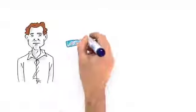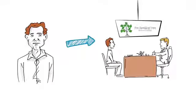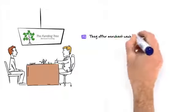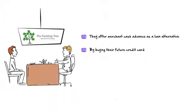John's old friend, Tom, heard his dilemma and suggested him to get in touch with the Funding Tree. They offer Merchant Cash Advance as a loan alternative by buying their future credit card sales from people just like John.